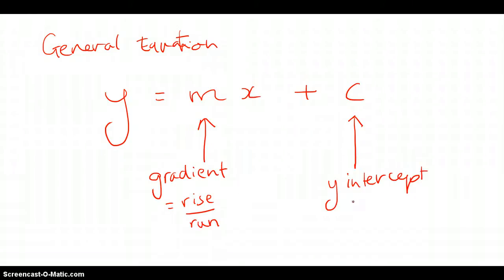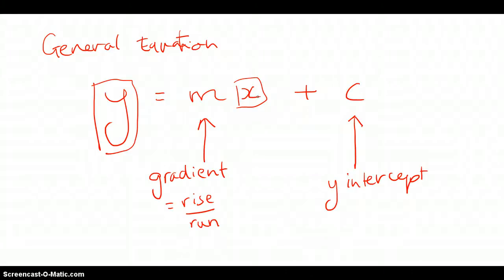At this stage, you don't really need to worry about x or y — they are merely placeholders for values we'll be plugging in later. But for now, the key things to take from this equation are that m stands for the gradient, and c stands for the y-intercept.